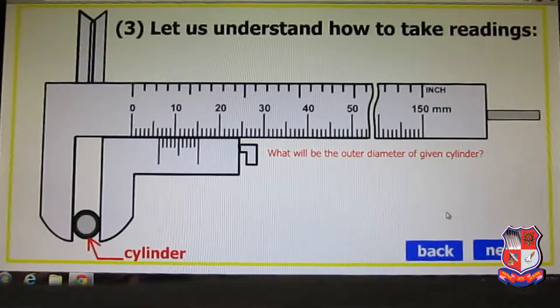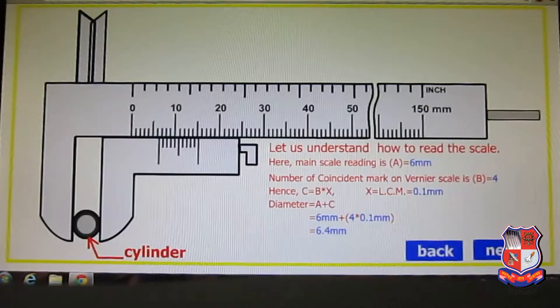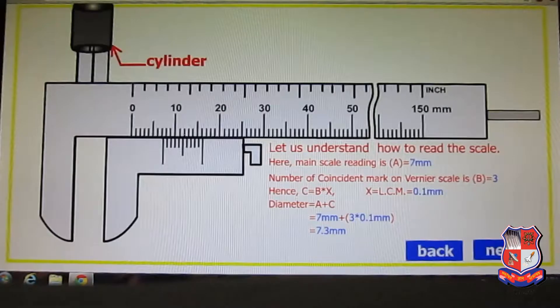Now let us study how to take readings from vernier calipers. One cylinder is kept here between these two lower jaws. What will be the outer diameter of the given cylinder? You can see the dimension of this object is 6mm complete measurement, and the fourth division is aligned with this division. So measurement will be 6mm plus 4 times 0.1mm, that is 6.4mm. Another example: the vernier caliper is very useful to measure the internal diameter of a cylinder.